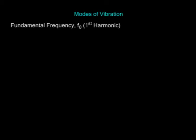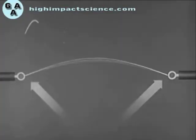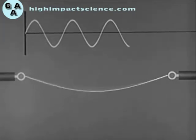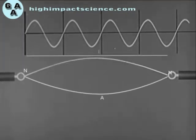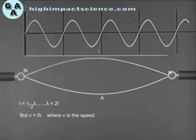Modes of vibration for a vibrating string. Both ends of the string are fixed, producing displacement nodes at each end. For the fundamental frequency (first harmonic), the string is plucked in the middle, producing the simplest possible stationary wave. The distance between the two nodes, L, equals half the wavelength: L = λ/2, so λ = 2L. Since V = Fλ, the fundamental frequency is F₀ = V/λ = V/2L.